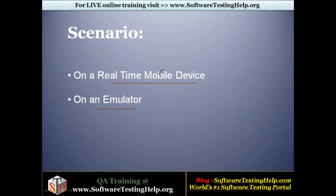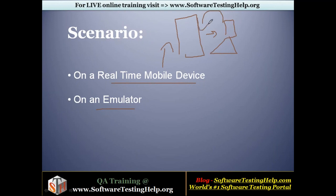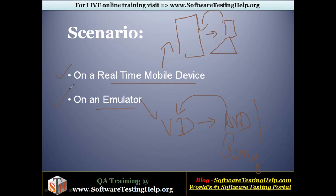For the real-time mobile device, I'll connect the device with the system using a USB cable. For the emulator, I will create a virtual device with certain configurations — either using AVD, the Android Virtual Device Manager, or by using Genymotion. We'll see how to perform automation on both devices in parallel.